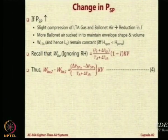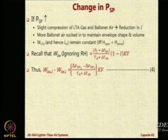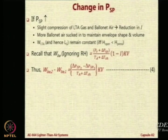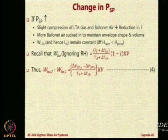Look at the expression for the weight of the ballonet air: ratio of the pressures and temperature, 1 minus SI, into K into V — ignoring the volume contribution of E. The difference in the two, delta WBA, will essentially be: we keep PS the same (we are not changing the ambient air pressure, just the superpressure inside), so the difference comes only from PSP. Therefore, we get delta PSP2 minus delta PSP1 into KV, divided by TA plus TSH (delta TSH).